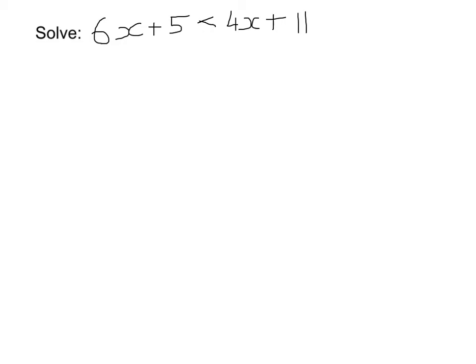If I wanted to solve this, I would minus 4x from both sides of the inequality. And if I did that, the left hand side of the inequality would give me 2x plus 5. I've still got my less than sign. And I've got just 11 on the right hand side.